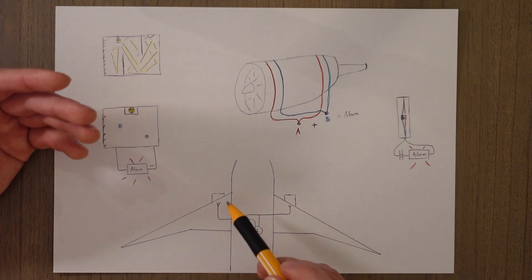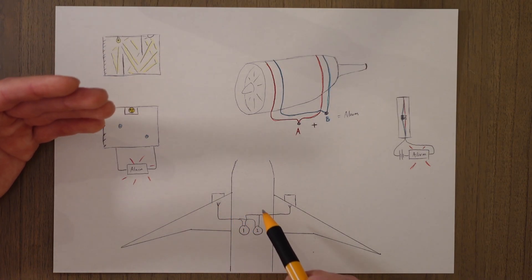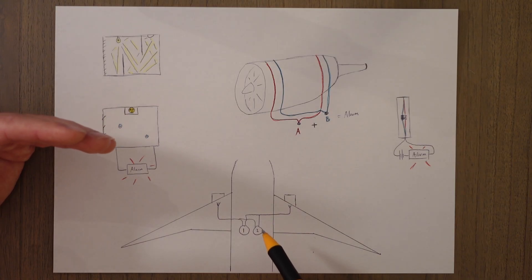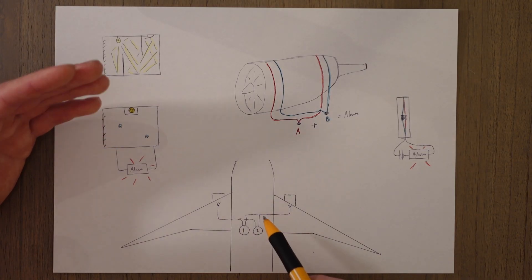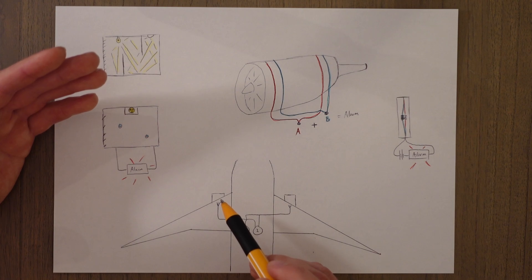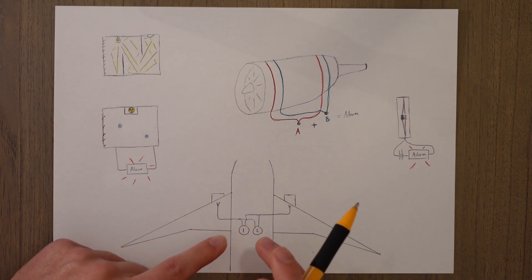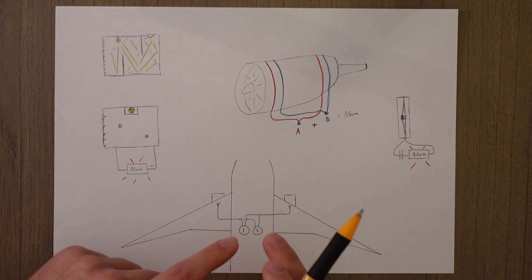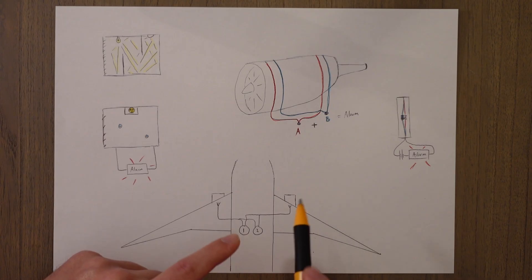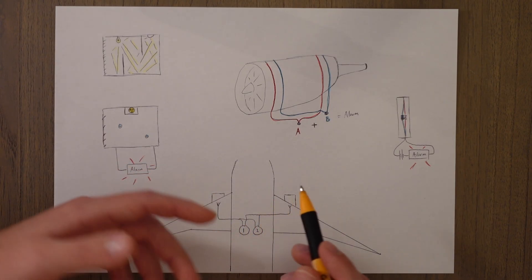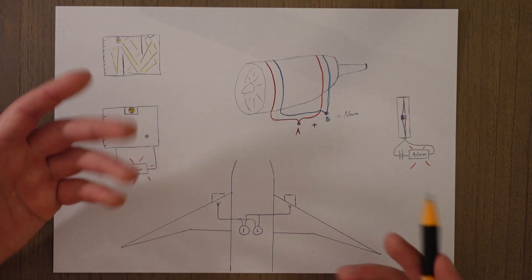If that doesn't work we then select the other squib to be activated which then selects the other bottle to discharge over the fire and put it out. And two bottles doesn't mean that there's two per engine, it's just two for both engines and you can either do one in each or both in one, or hopefully none in neither when you don't have a fire. And that's pretty much it.